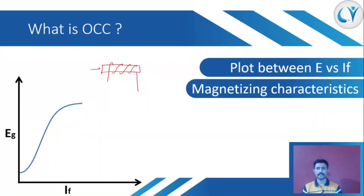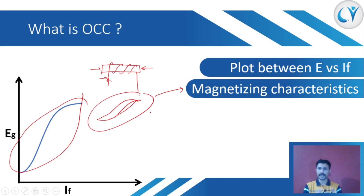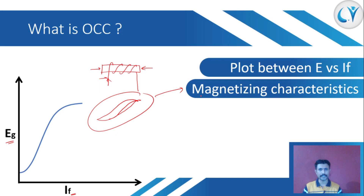Consider a piece of iron and a conductor. If we flow current through this conductor, the magnetizing graph of this iron piece looks like the BH curve or the magnetizing curve. Our open circuit characteristics also looks similar to this, and that is why OCC is also known as the magnetizing characteristics of a DC generator.